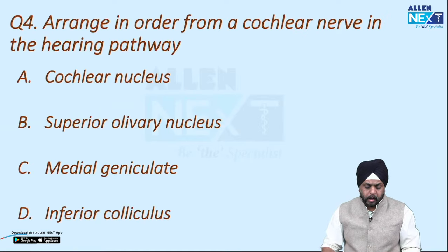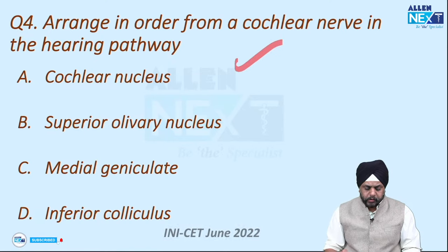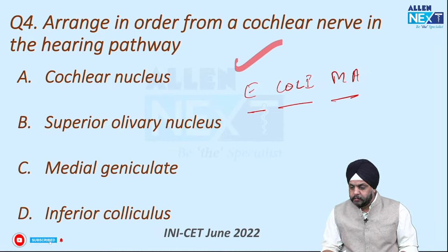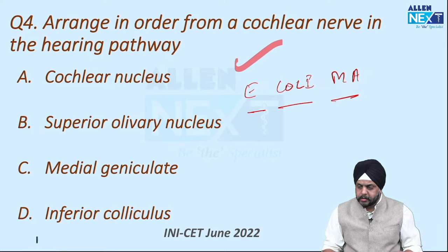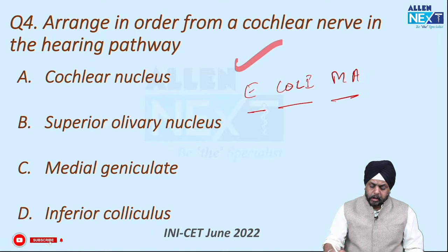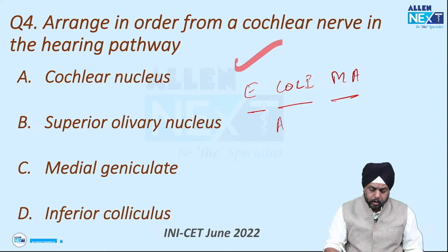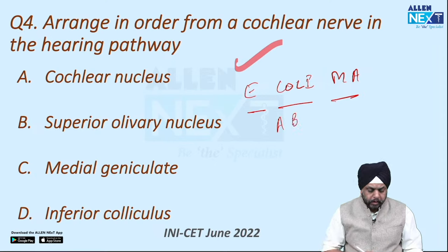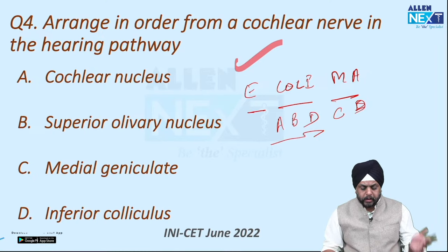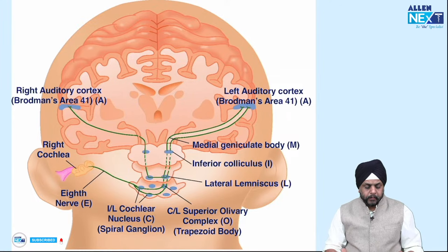Arrange in order from cochlear nerve to the hearing pathway — this is a repeat question, the same E.CoLiMa mnemonic. This is the first question I dealt with; it has come four times in the last three years. A is cochlear nucleus, B is superior olivary complex, C is medial geniculate body, D is inferior colliculus. The answer is A — you can simply solve it using E.CoLiMa.